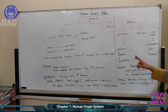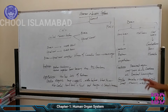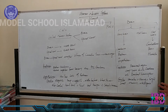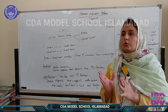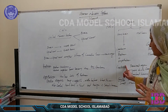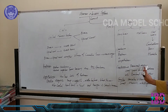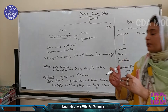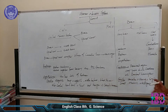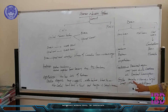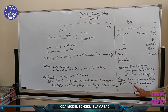The cerebrum is the prominent region of the brain. A deep groove divides the cerebrum into two cerebral hemispheres. The main functions of the cerebrum are sensation, hearing, sight, smell, memory, and intelligence.